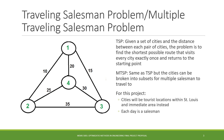The Traveling Salesman Problem is defined as the following: given a set of cities and the distance between each pair of cities, the problem is to find the shortest possible route that visits every city exactly once and returns to the starting point. A version of this is the Multiple Traveling Salesman Problem, where the set of cities is broken into subsets where multiple salesmen travel to their own given subsets.